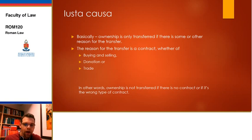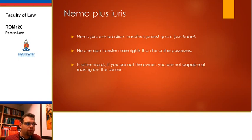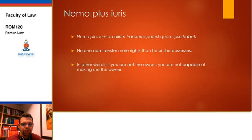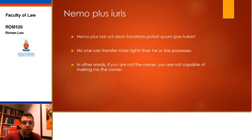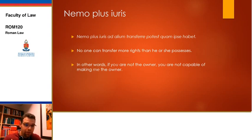Next, the Nemo plus juris rule. The Latin is: 'Nemo plus juris ad alium transfere potest quam ipse habet.' The basic idea is that no one can transfer more rights than he or she possesses. I can't give you a right that I do not have. I cannot make you owner if I am not the owner.